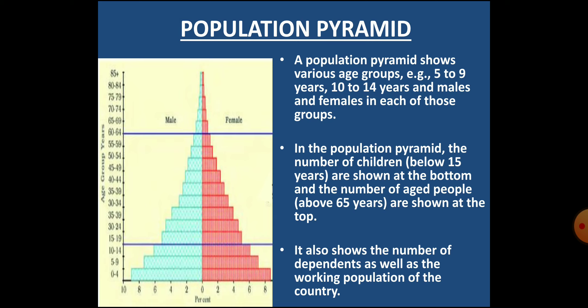The population pyramid shows firstly the total population divided into different age groups such as 5 to 9 years, 10 to 14 years, and so on. Secondly, it shows the percentage of the total population subdivided into males and females in each age group. The shape of the population pyramid reveals two major details: the age group and sex ratio, that is the number of females per 1000 males.